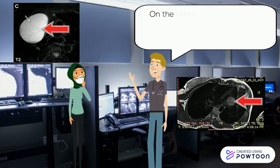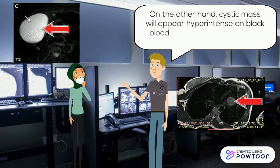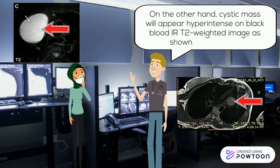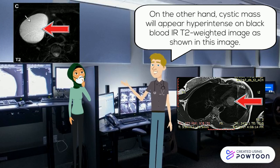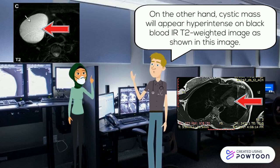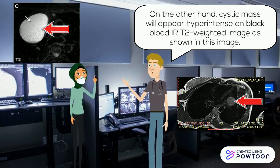On the other hand, a cystic mass will appear hyper-intense on black blood inversion recovery T2-weighted image, as shown in this image.